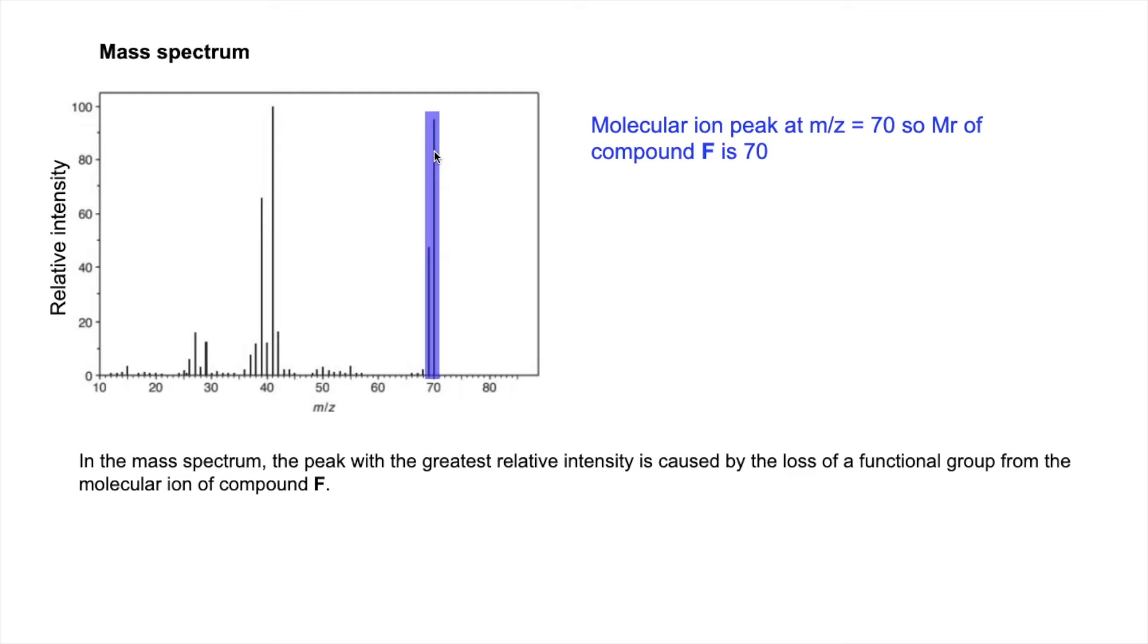So then what we can do now is tie that in with the empirical formula. Remember that was C4H6O. Well that adds up to 70. So the molecular formula must also be C4H6O. So you need to be really clear about how you're linking all the evidence together.